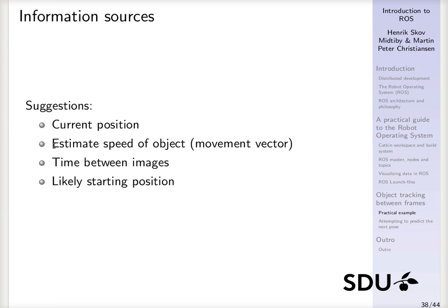We could also estimate the current speed of the object or its movement vector and use that in combination with the current position to predict where it will be in the next frame.